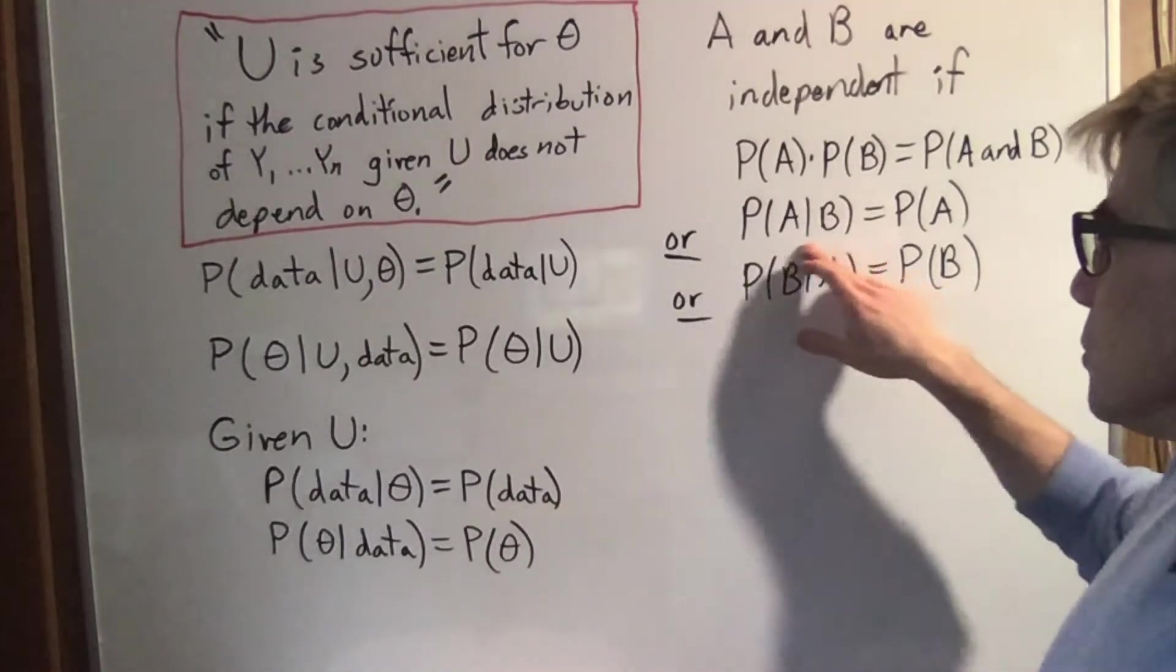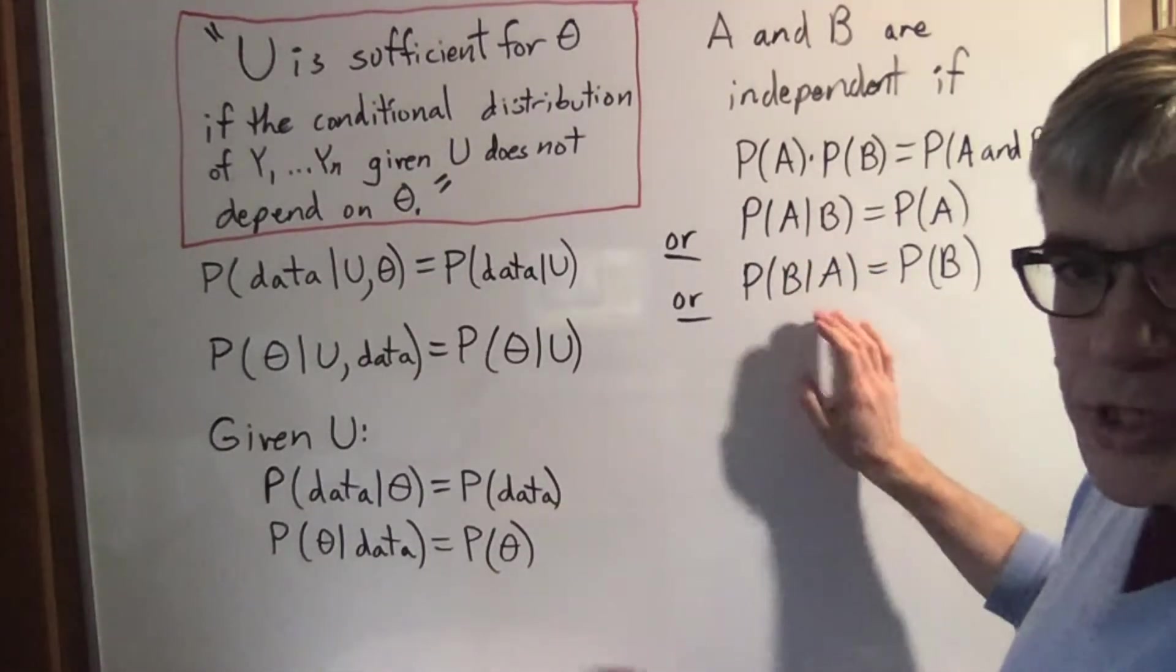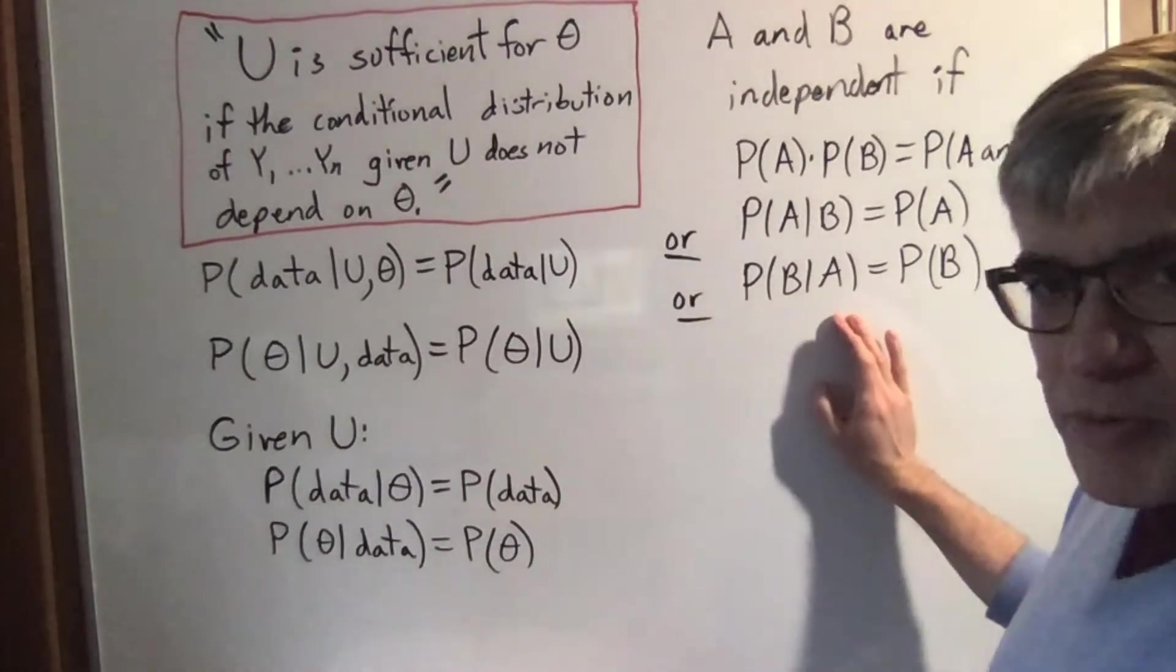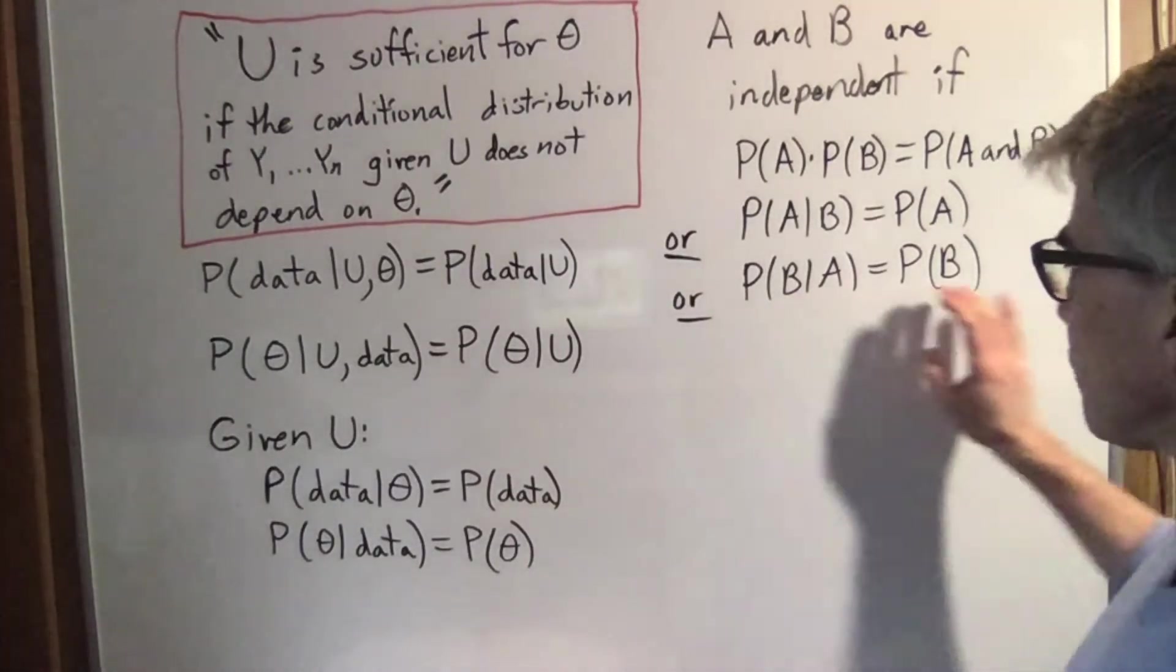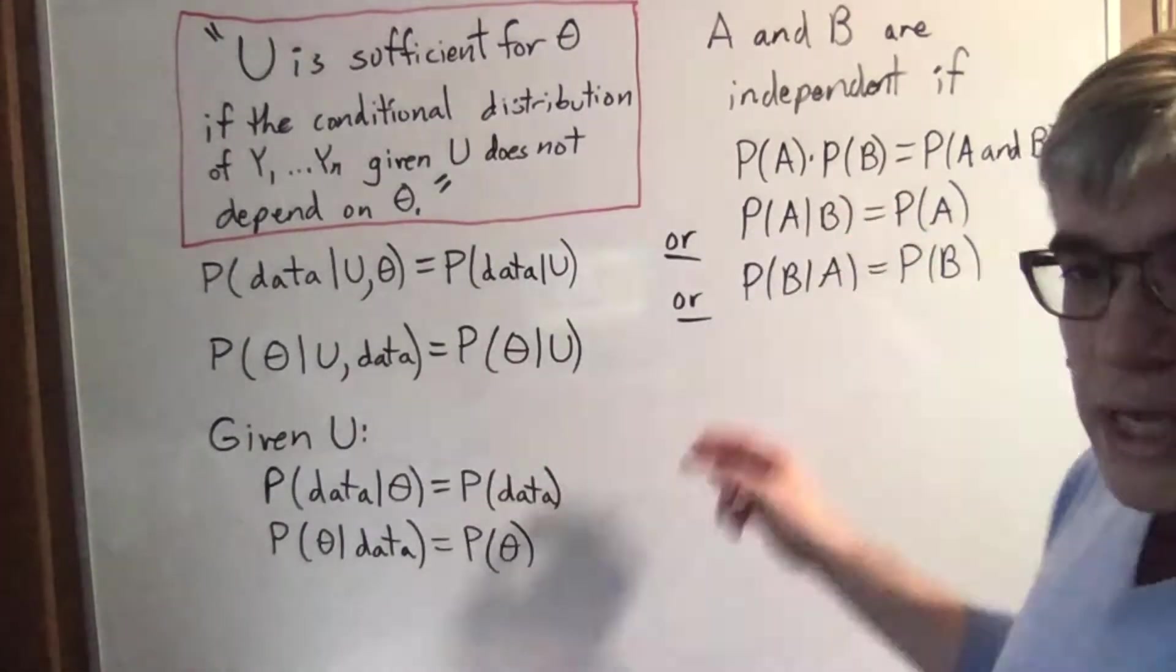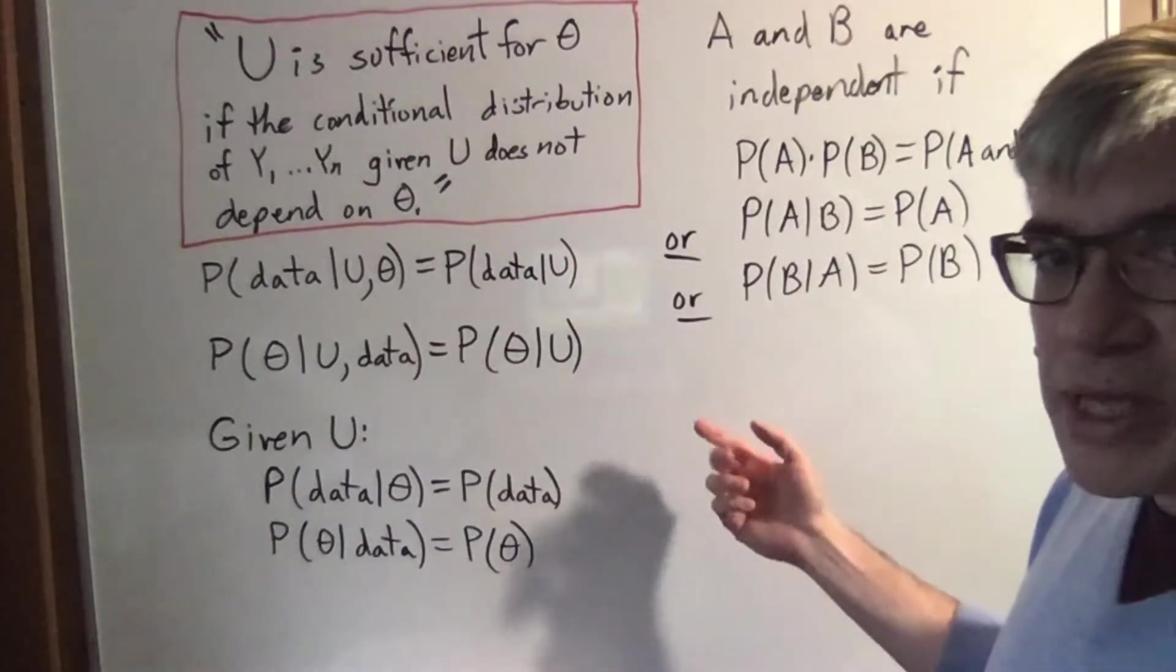But you can also say, what's the chance that it's cloudy given that I rolled a three? The roll of the three doesn't do anything for you. So there are two opposite ways of talking about independence.